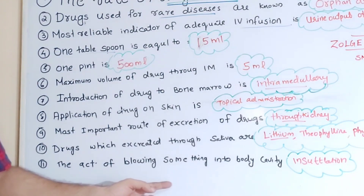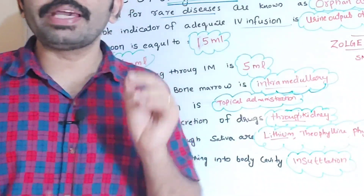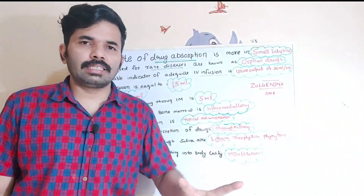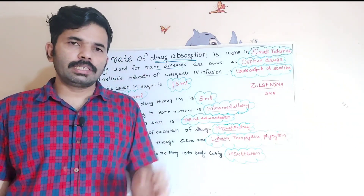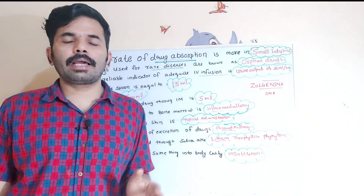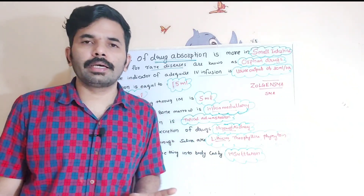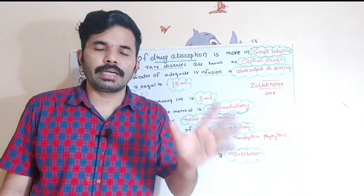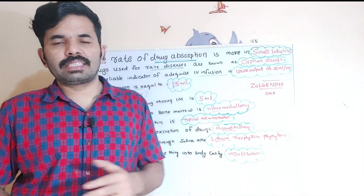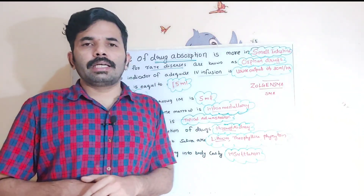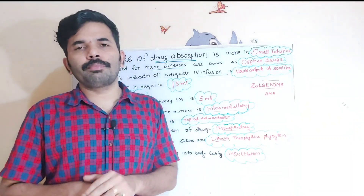Insufflation is the act of blowing something — a gas or powder — into a body cavity. In laparoscopic or keyhole surgery, carbon dioxide gas is introduced into the body. Carbon dioxide is colorless and non-flammable, and is used as the gas for insufflation.